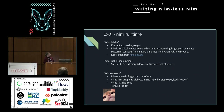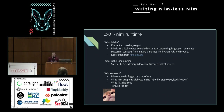The Nim runtime includes safety checks, memory allocation, and garbage collection. So we don't have any index-out-of-bounds on buffers, and we don't have any underflows or overflows — that's strictly on the runtime. So if we have memory safety checks, why would we want to remove it?